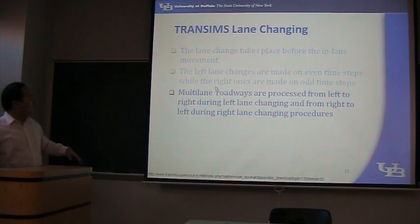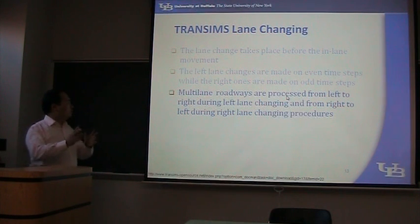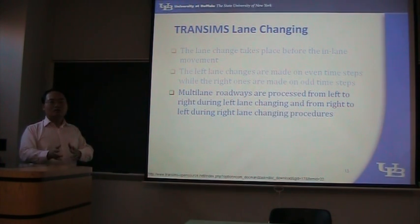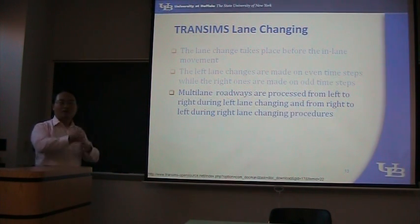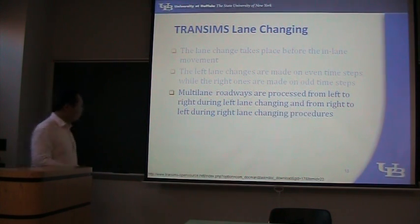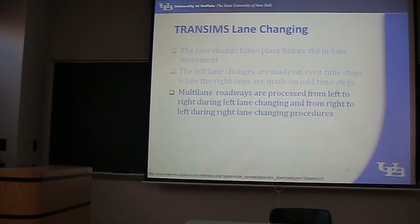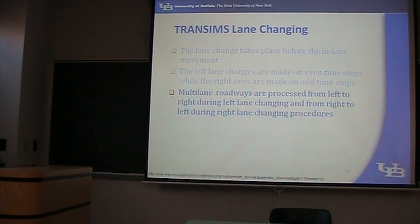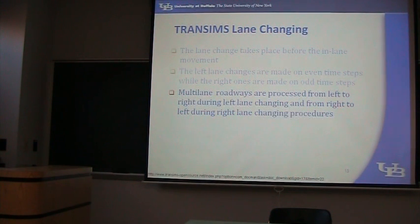This is a simplification. Another important point: when modeling left lane changes, lanes are processed from left to right. So we first look at the leftmost lane, then the second leftmost, then the third. If we have three lanes and vehicles are considering changing left, we process this lane first — they don't have the ability to change left — then look at the next lane. In this way, vehicles can be moved efficiently.